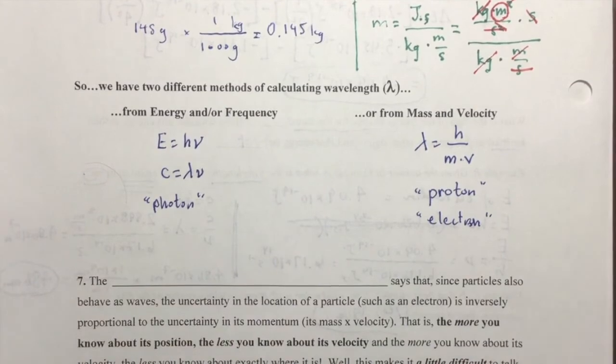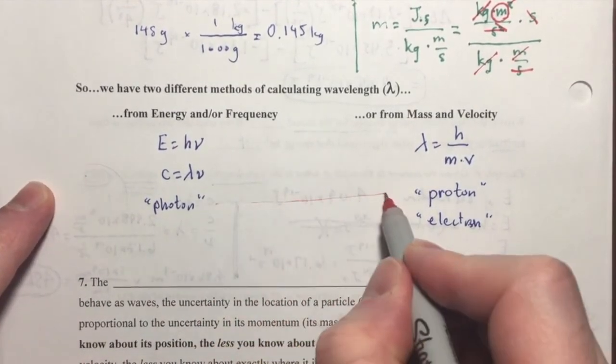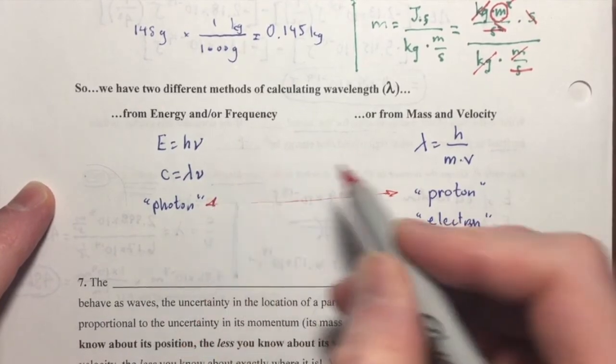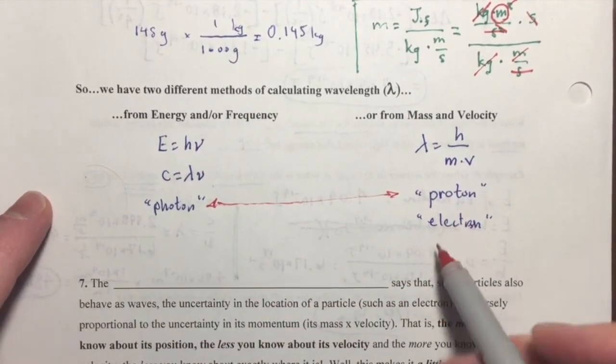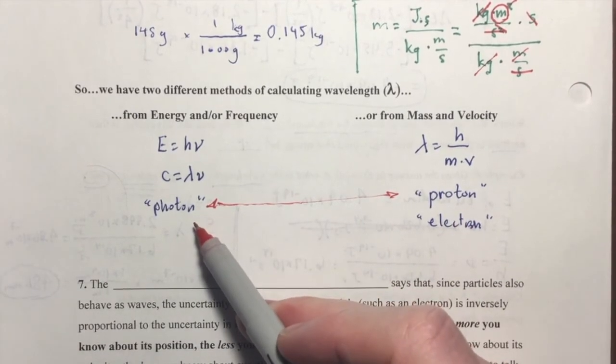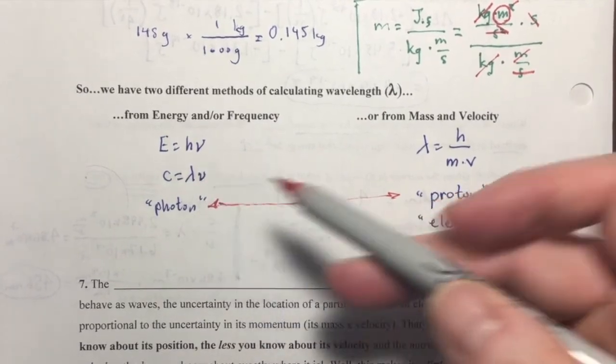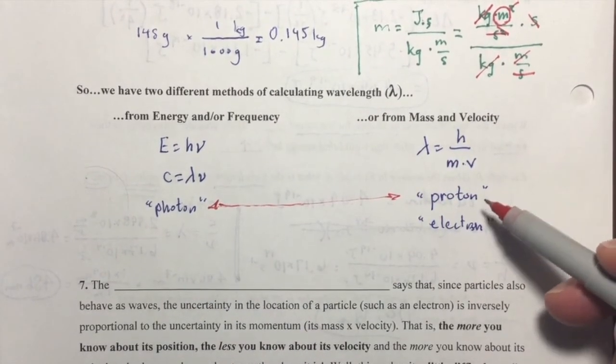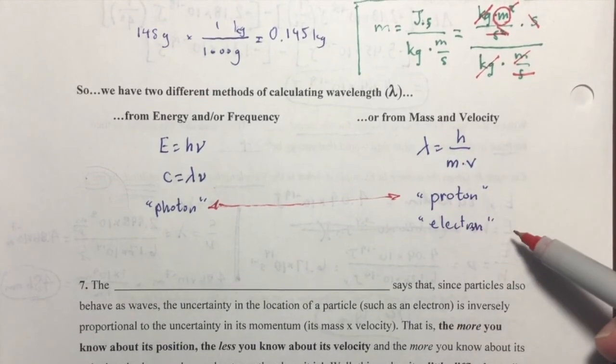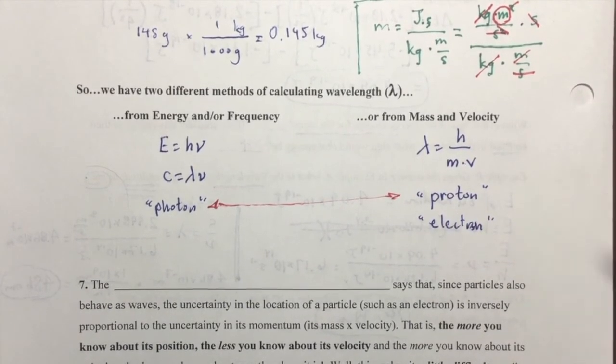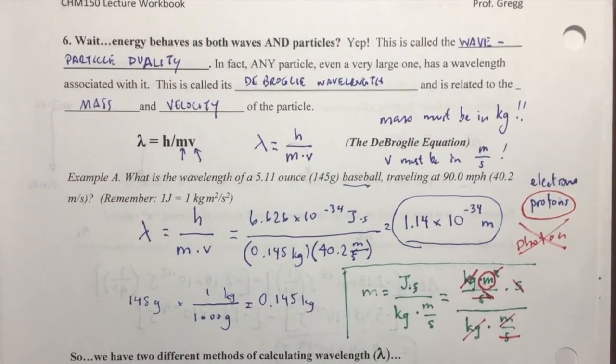Notice very similar sounding words, photon and proton. A photon is a quantum of electromagnetic radiation, and we use these equations. A proton is a particle that has mass, and so we would use the de Broglie equation. Okay. And that is the de Broglie wavelength.